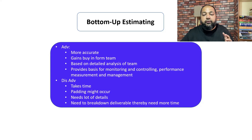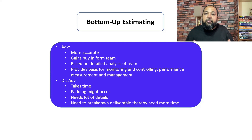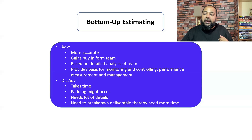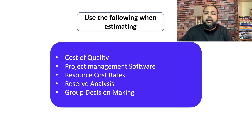Bottom-up estimating is the most accurate — it's the best way of estimating. Team members get buy-in because they're involved in breaking down activities and providing estimates, making it a team-building activity. It provides a solid basis for monitoring, controlling, and performance measurement. Disadvantages: it takes a longer time, padding may occur, and it needs a lot of detail and breakdown of work items — requiring more time. However, the accuracy is very good.